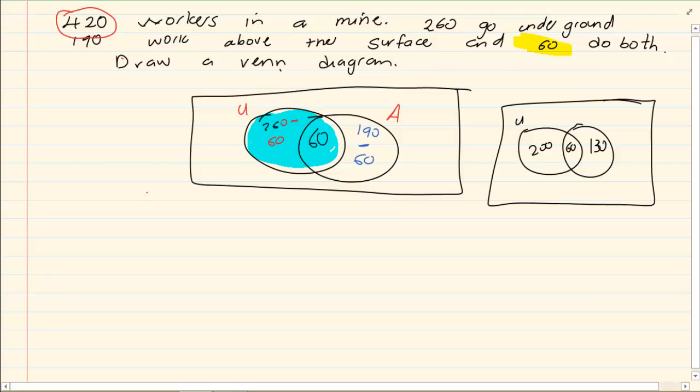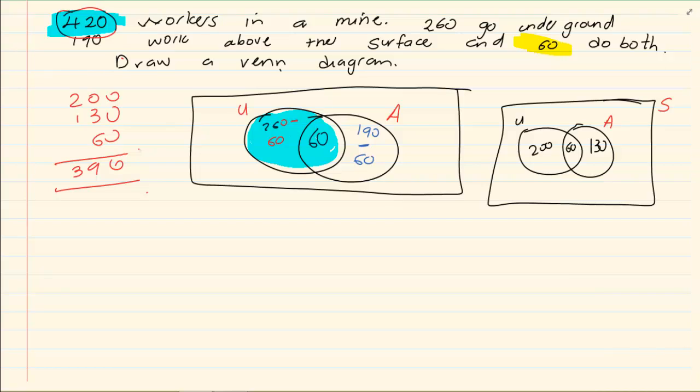If you count, they are telling us that there are 420 workers. You have 200 plus 130 plus 60 which is equal to 390. Something is not right. Our entire sample space is not used. So we know there is 420, you have only used up 390, so the balance is 30.